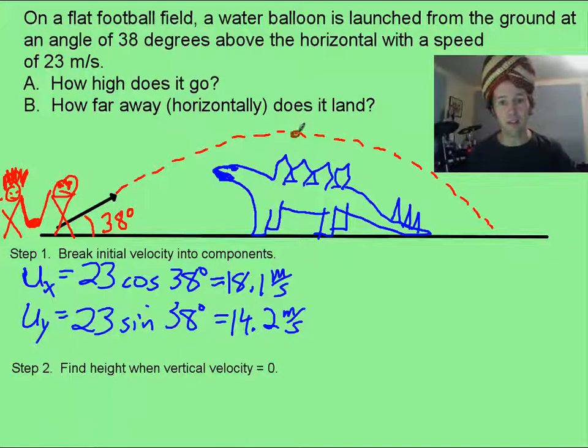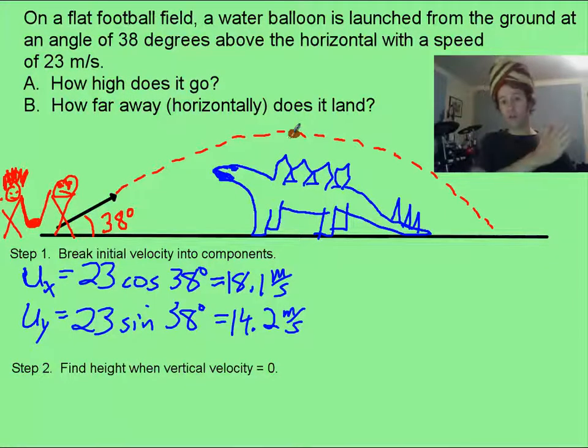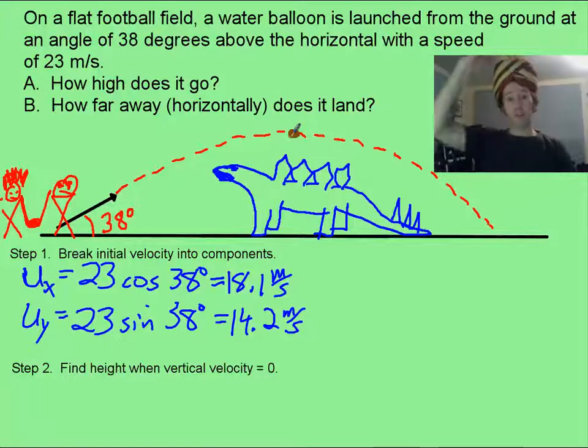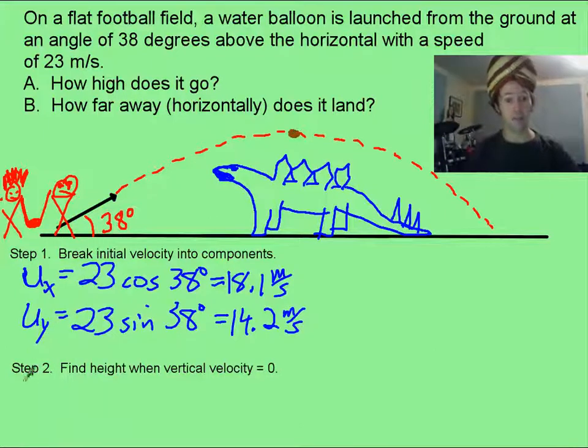Now to find the height, that's going to be this point here. Its horizontal velocity will still be what it's always been, the 18 meters per second. But that vertical velocity is going to have come to zero, because it's just about to start back down. So that makes step two, finding the height when the vertical velocity is equal to zero. At least that's one way to do it.